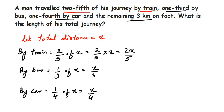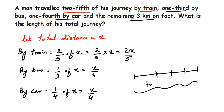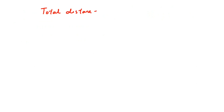Now we know that if we add all these distances — all these fractions — it should equal the total distance, that is, the total journey. The man travelled two-fifths by train, some remaining by bus, then remaining by car, and the rest by foot. So adding everything up should equal the total distance, which we assumed to be x.